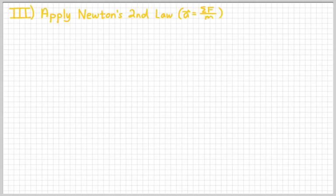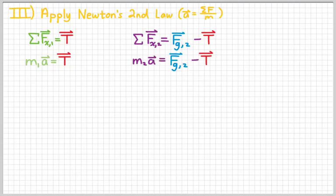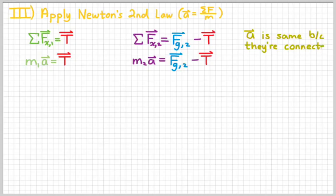Third step is to apply Newton's Second Law: acceleration equals net force over mass. Rewriting the two net force equations: m1·a equals T, and m2·a equals weight minus T. Remember that the acceleration is the same for both because they're connected, so we're solving for the same A in both equations. Since we have two equations with two unknowns — A and tension — we need to solve this system of equations.